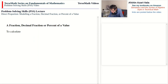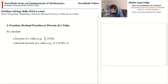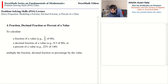The aim of this video is to bring about the understanding that if you are trying to find a fraction of a value such as two-thirds of 60, or a decimal fraction of a value such as three-tenths of 80, or a percent of a value such as 22% of 140, you can do so by multiplying the fraction, decimal fraction, or percentage by the given value.